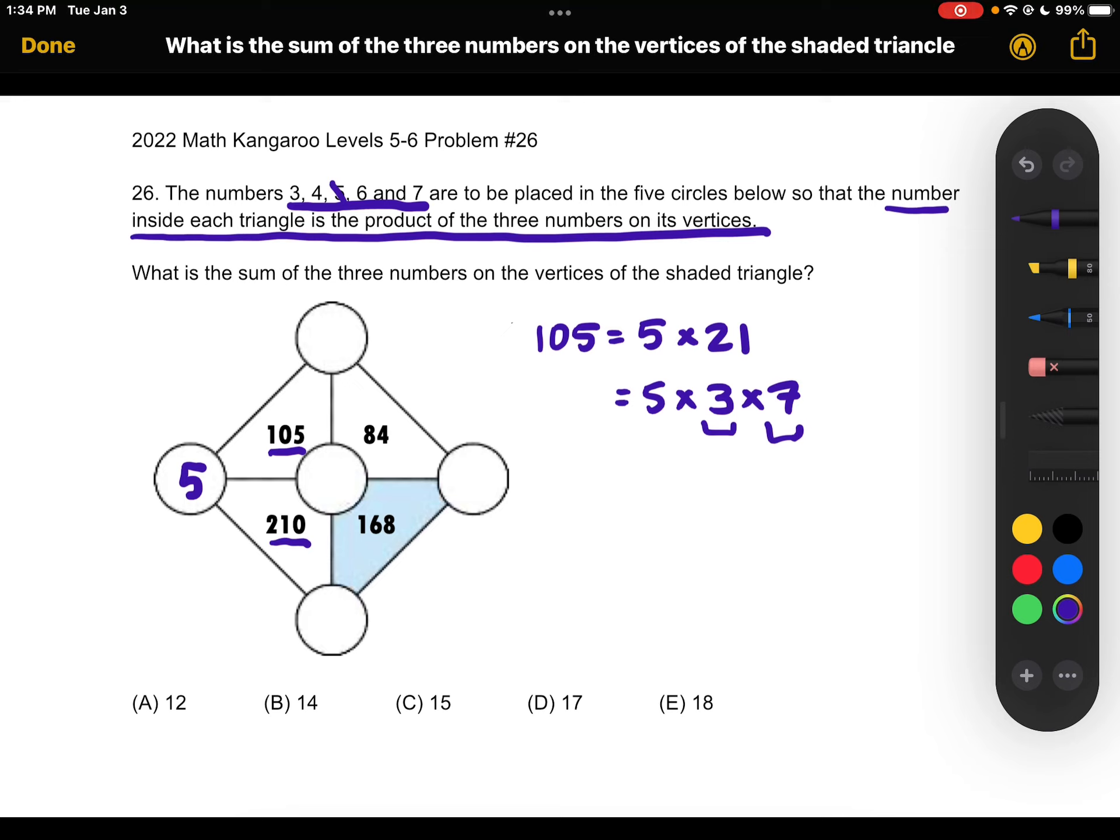However, we notice that if we place 3, so we have two options. We either place 3 here and 7 here, or the other way around.